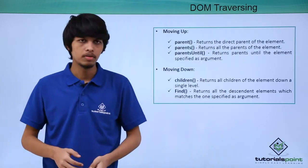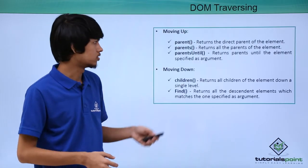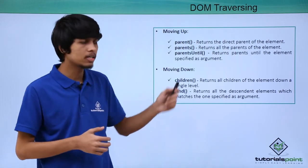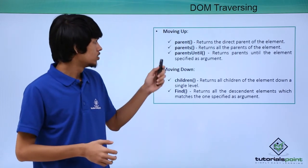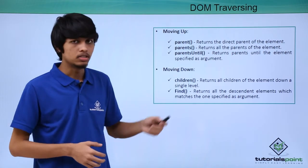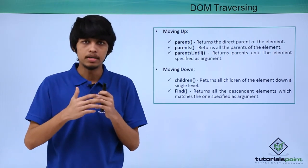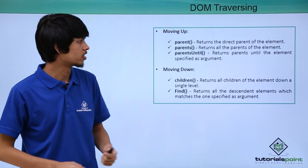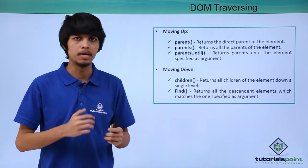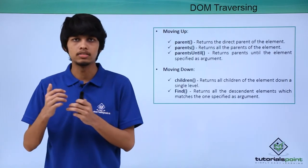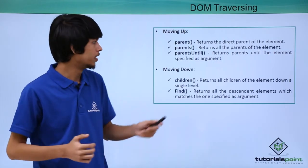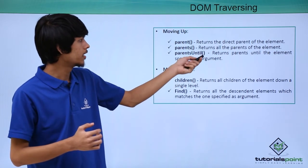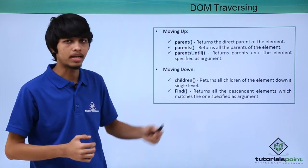To move up from an element, we have three functions. First is parent(), which returns the direct parent of that element. Second is parents(), which returns all the parent elements. Third is parentsUntil(), which returns all parents until the parent supplied as an argument in the brackets.